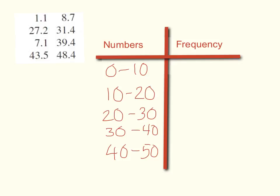How many numbers on my list are between 0 and 10? 1, 2, 3. So my frequency for those numbers is 3. How many between 10 and 20? None. None on my list. My frequency is 0.